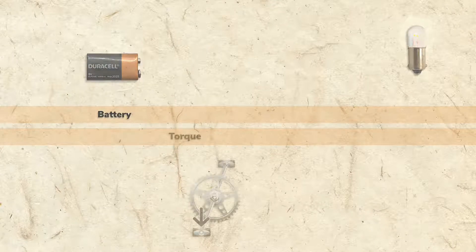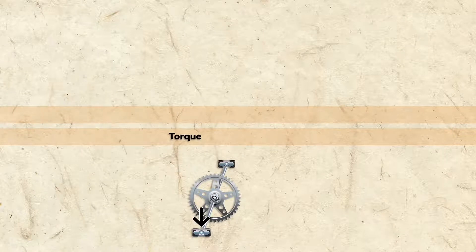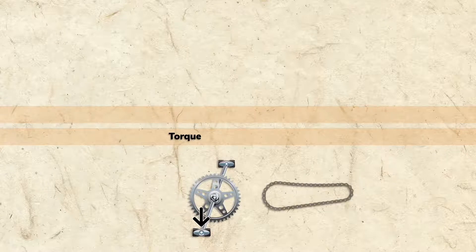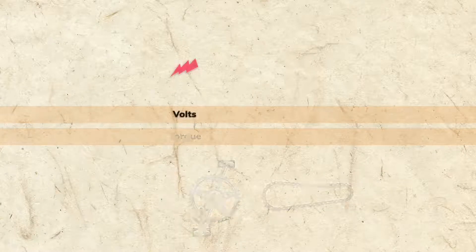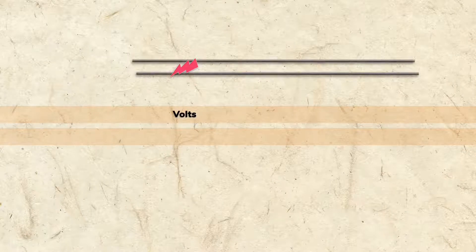By applying pressure to pedals, which is measured in torque, there is potential for energy to be delivered through the chain. By applying pressure to electrons, which is measured in volts, there is potential for energy to be delivered through wires.